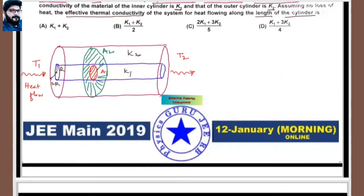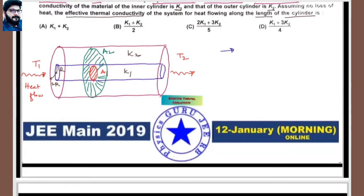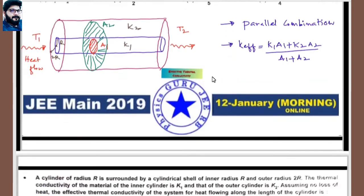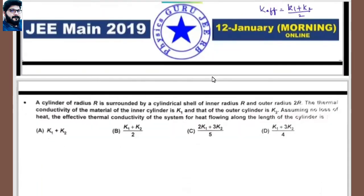These two cylinders are considered to be in parallel combination. For a parallel combination, the equivalent thermal conductivity is given by: k_eff = (k1·A1 + k2·A2) / (A1 + A2). If A1 = A2 = A, then k_eff = (k1 + k2) / 2.